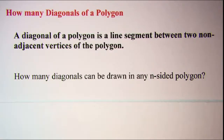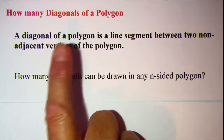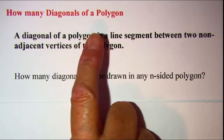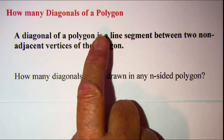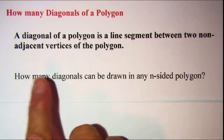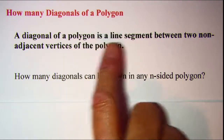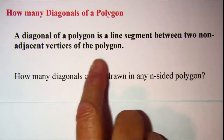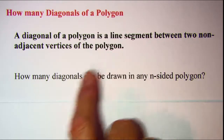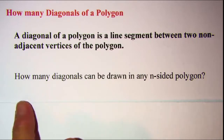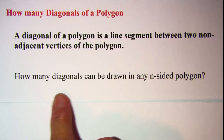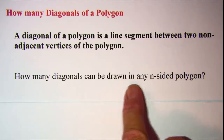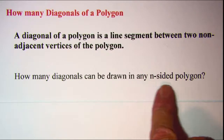In this video, we'll develop and use a formula for finding how many diagonals can be drawn for any polygon. A diagonal of a polygon is a line segment between two non-adjacent vertices of the polygon. Our question is: how many diagonals can be drawn in any n-sided polygon?